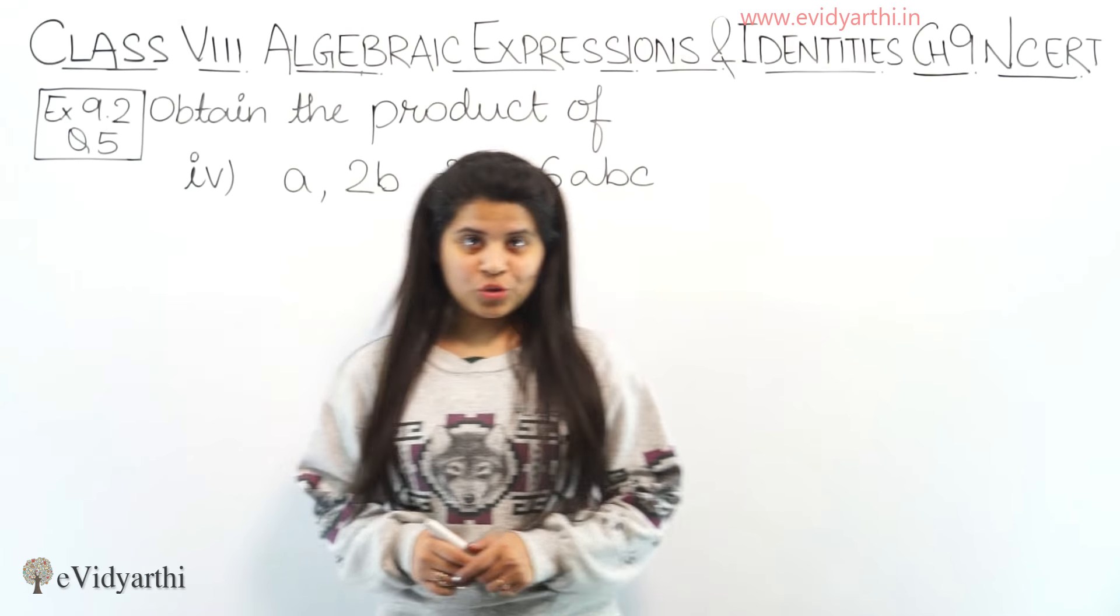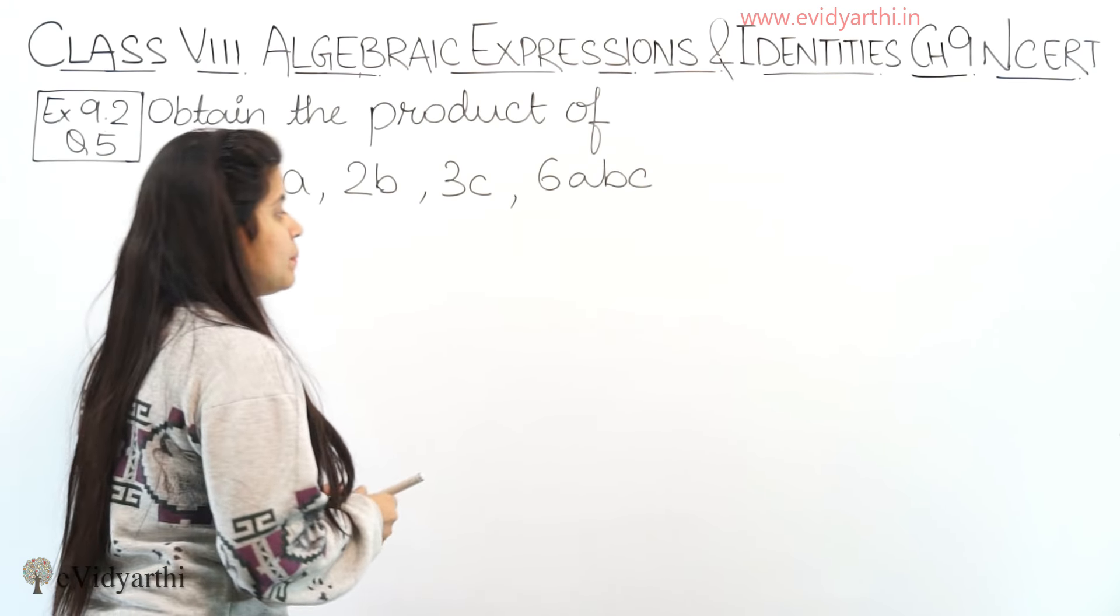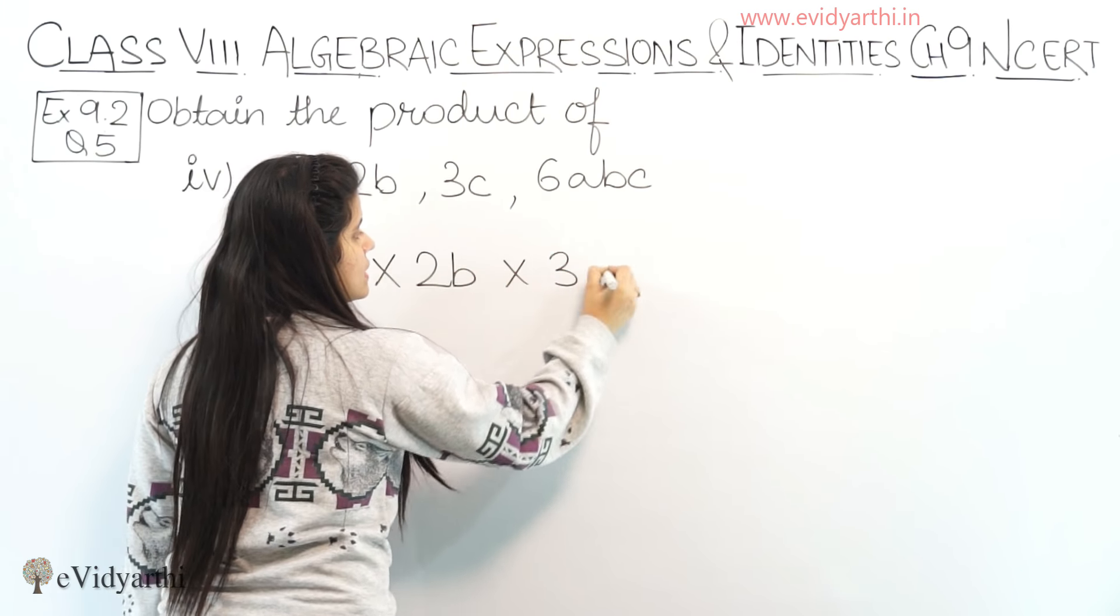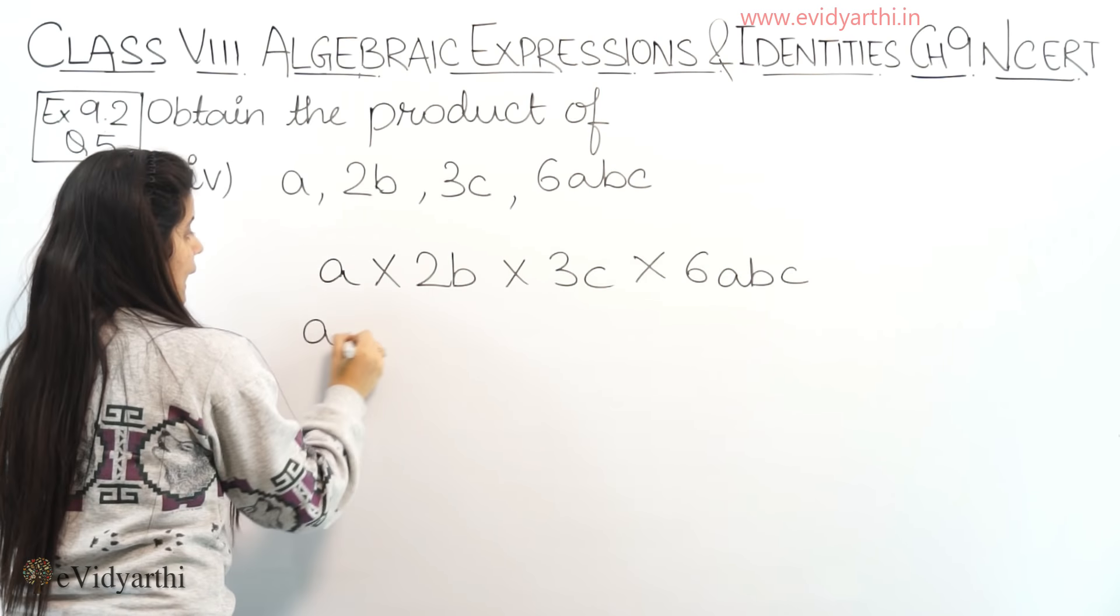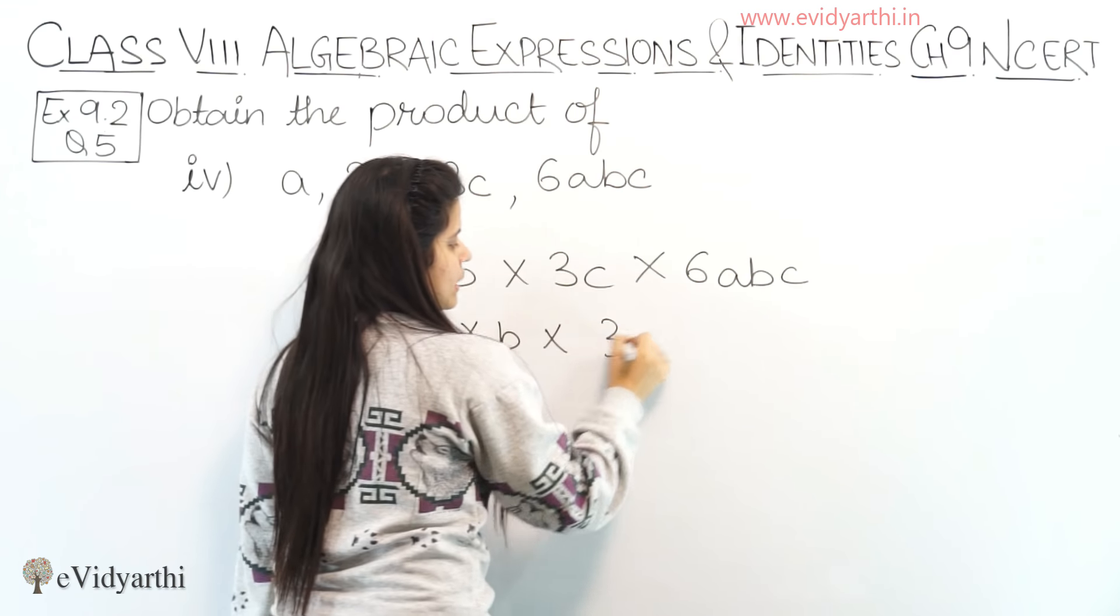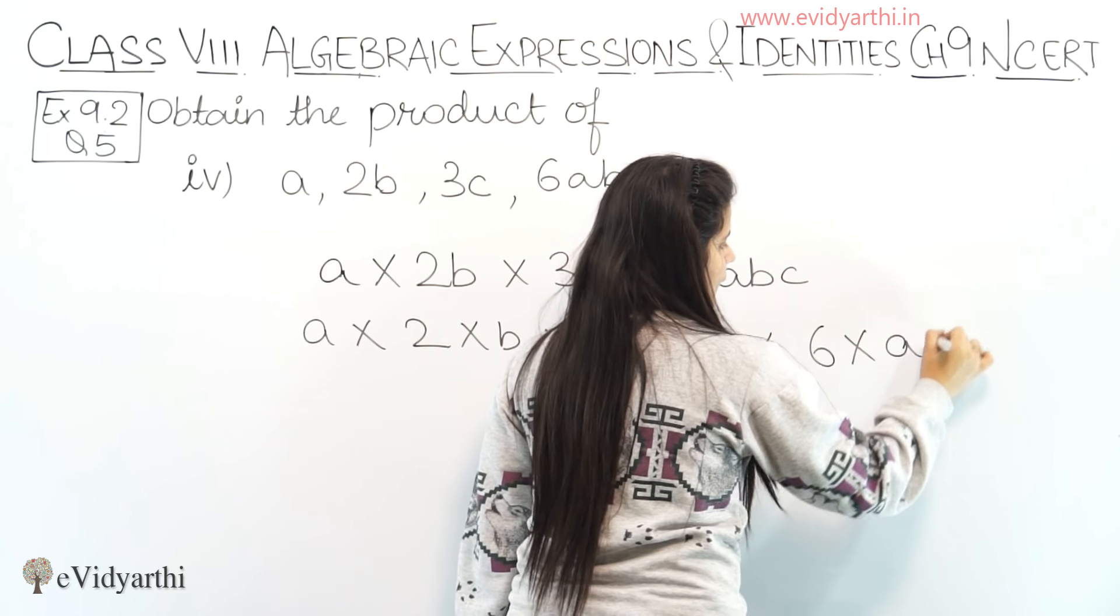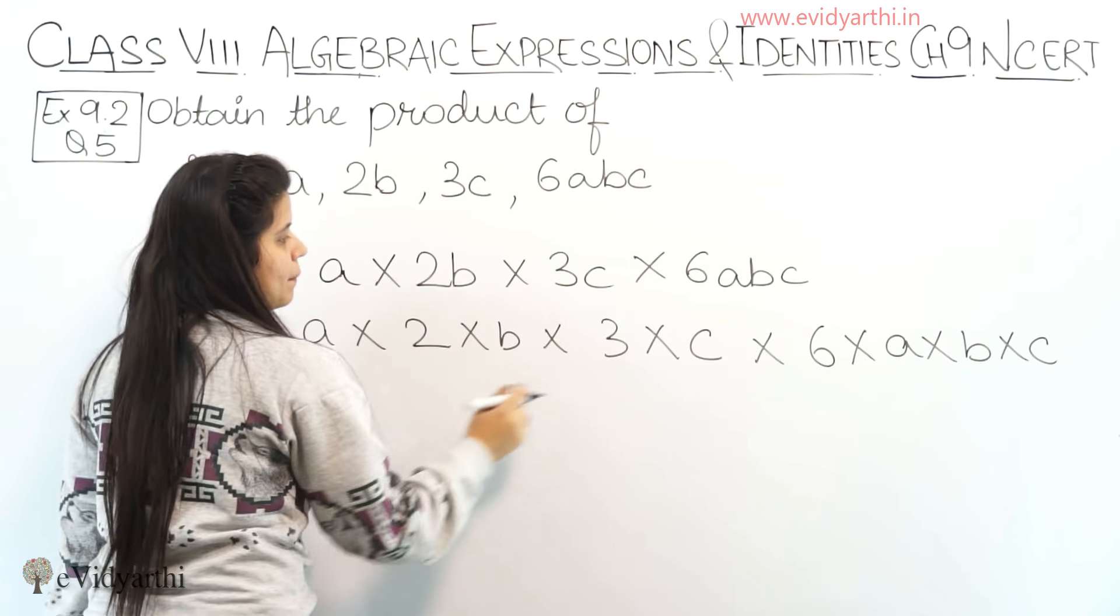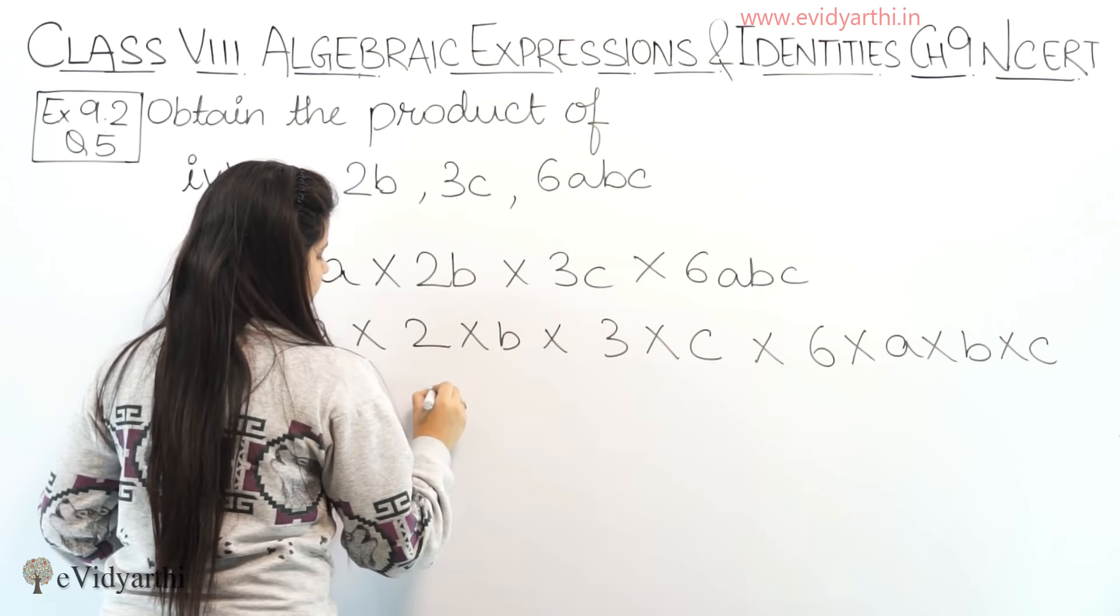Coming to the fourth part. We have a, 2b, 3c and 6abc. So: a into 2b into 3c into 6abc. a into 2b means 2 into b, and then we have 3c, which is 3 into c. Then 6abc is 6 into a into b into c. Now, numbers: 2 threes are 6, 6 into 6 is 36.